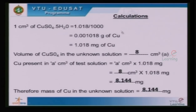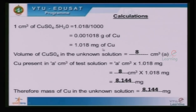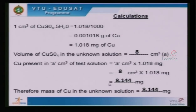The calculations are shown here. 1 cm³ of standard copper sulfate solution contains 0.001018 grams of copper, which can be expressed as 1.018 milligrams of copper. The volume of copper sulfate in the unknown solution is determined from the graph as 8 cm³. Copper present in 8 cm³ of test solution equals 8 × 1.018 mg = 8.144 mg. Therefore, the mass of copper in the unknown solution is 8.144 milligrams.